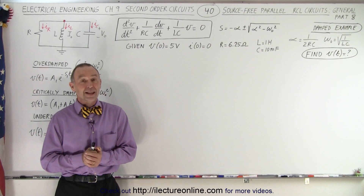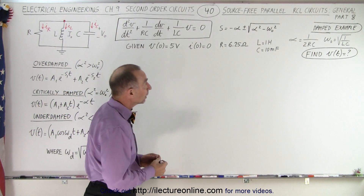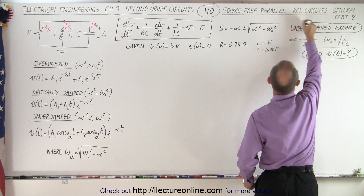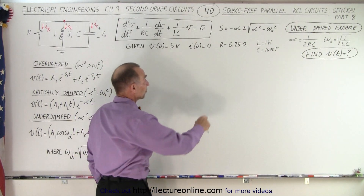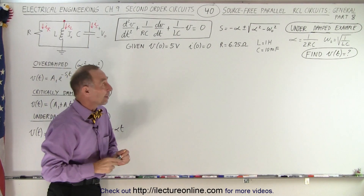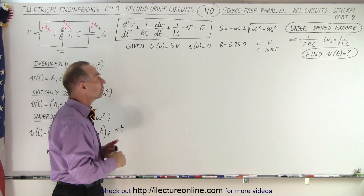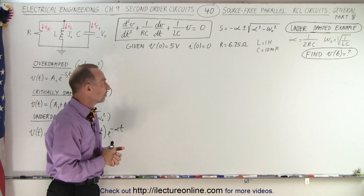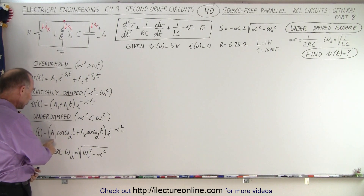Welcome to our lecture online. Now for the third case, the final of the three cases, we're going to deal with the underdamped example. In this case we need a larger resistor — we went from 5 ohms to 6.25 ohms. We knew from the previous example that the 5 ohm resistor gave us a critically damped situation, so increasing the resistance gives us an underdamped case.